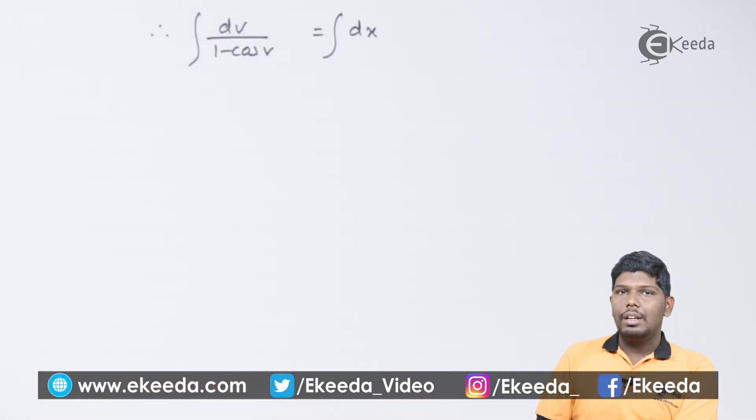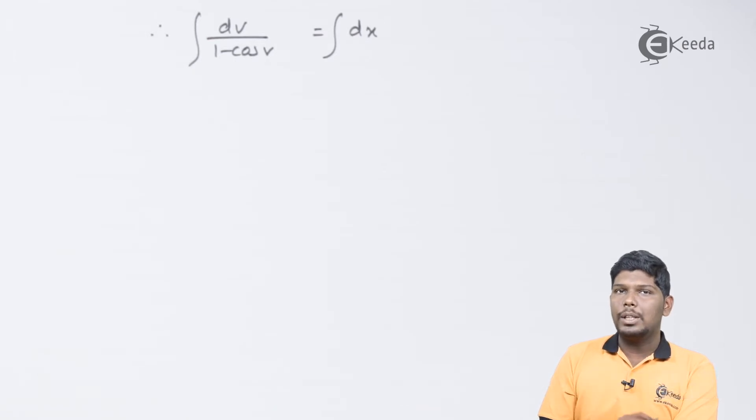In the earlier chapters of integration, we have seen that in the denominator, if we have 1 minus cos or 1 plus cos, we go for half-angle formulas. So 1 minus cos theta is 2 sin square theta by 2.